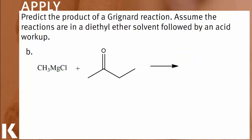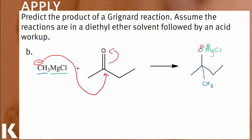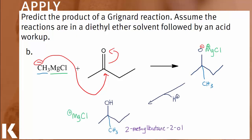In part B, the Grignard reagent is methyl magnesium chloride reacting with butane-2-one. The nucleophilic carbon will attack the electrophilic carbonyl carbon, resulting in the addition of the methyl group and the magnesium alkoxide intermediate. Acid workup will displace the magnesium and the final product is 2-methylbutane-2-ol.